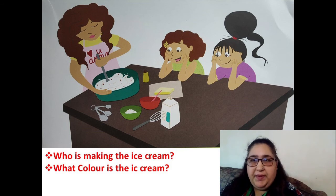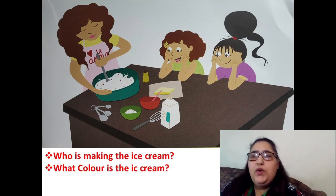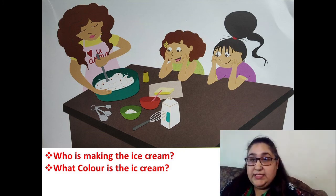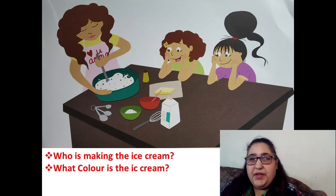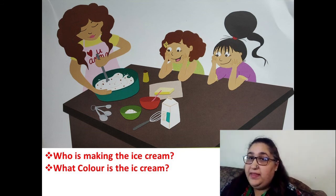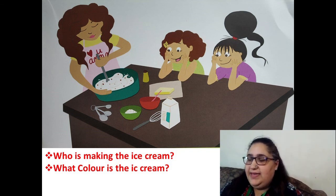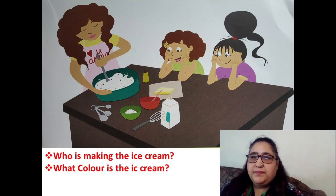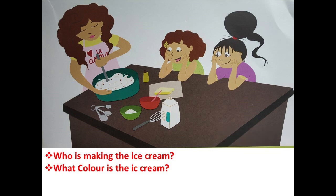Let's turn to the next page — look at the picture carefully. First question: who is making ice cream in this picture? Someone is making ice cream — who is that person? Next question: what color is the ice cream? There is a bowl with ice cream in it — what color is the ice cream?